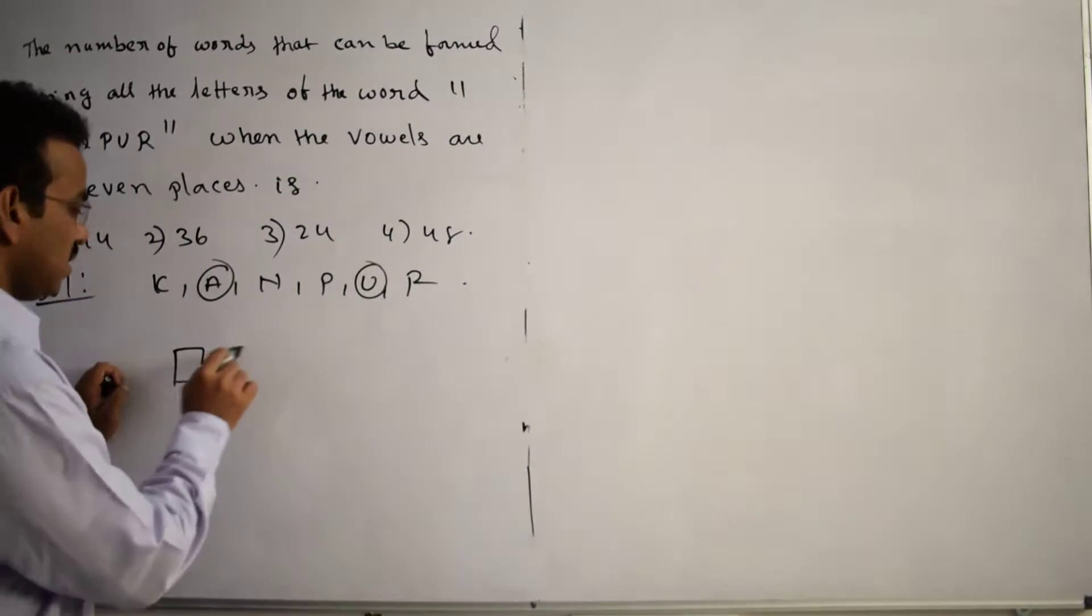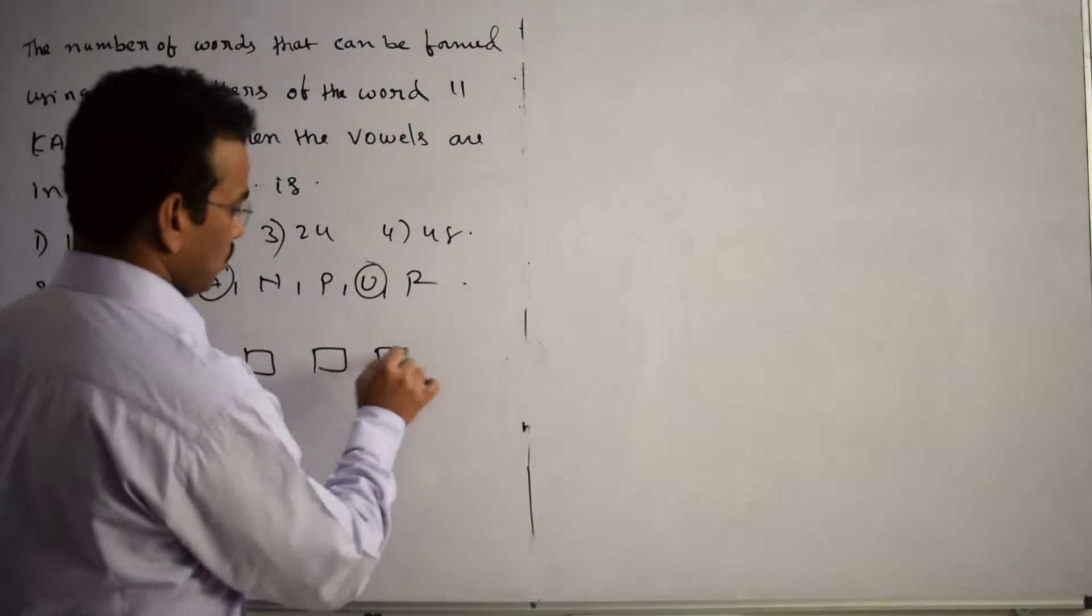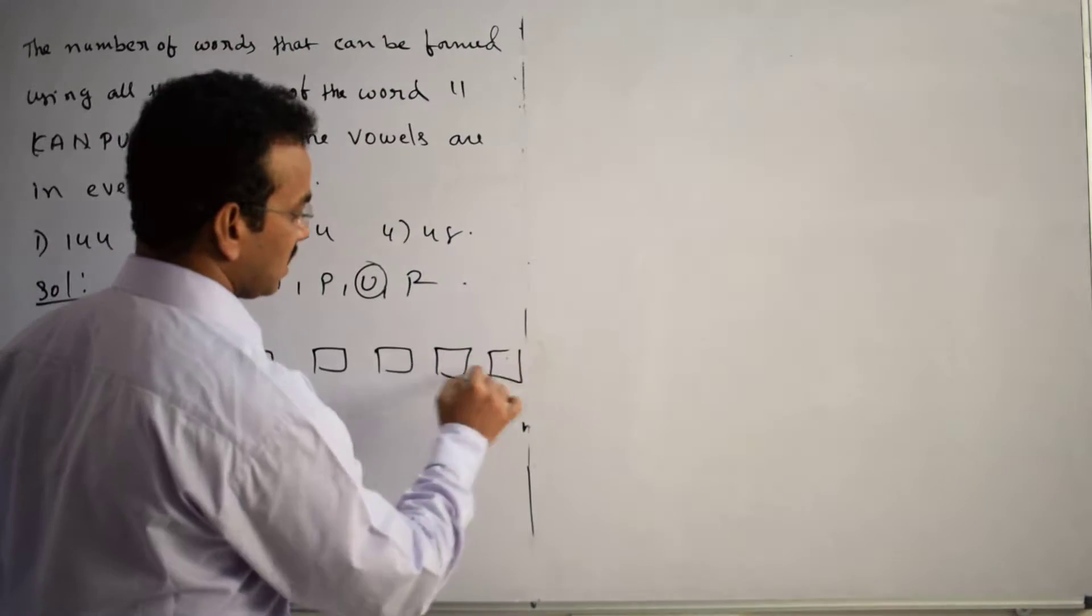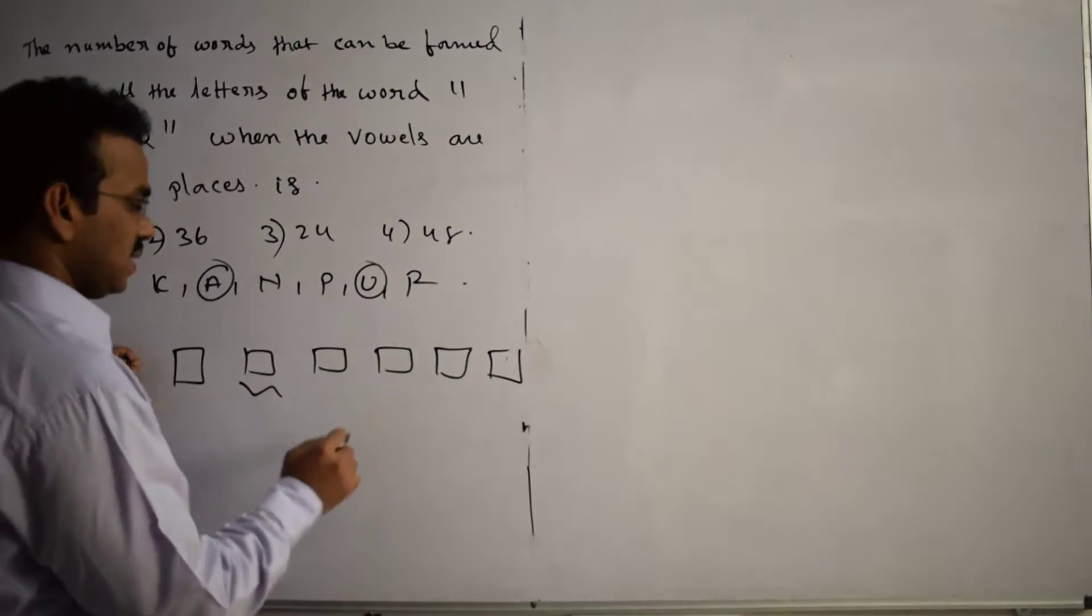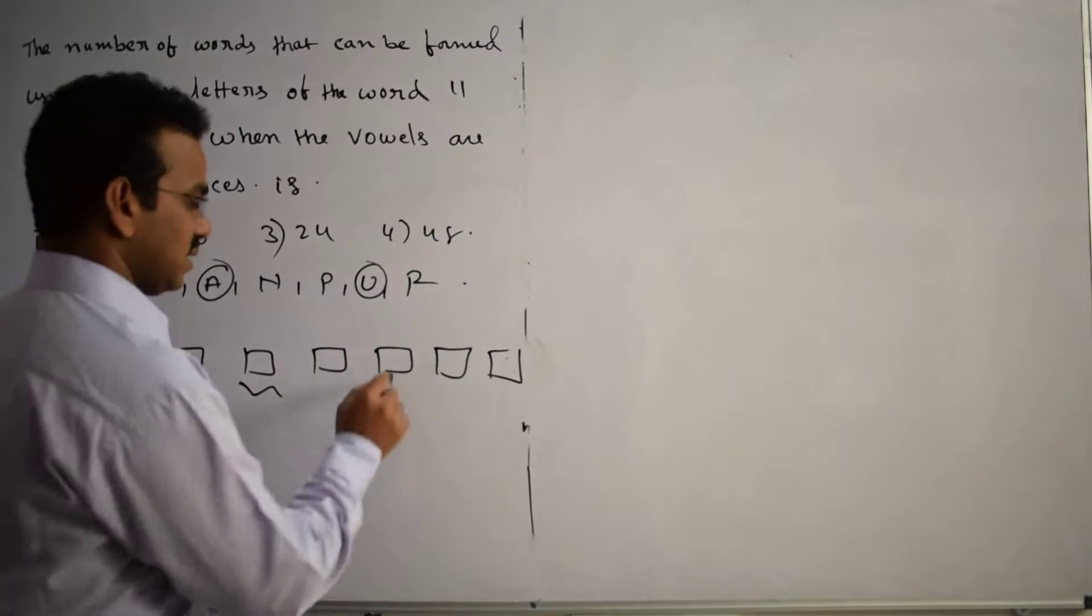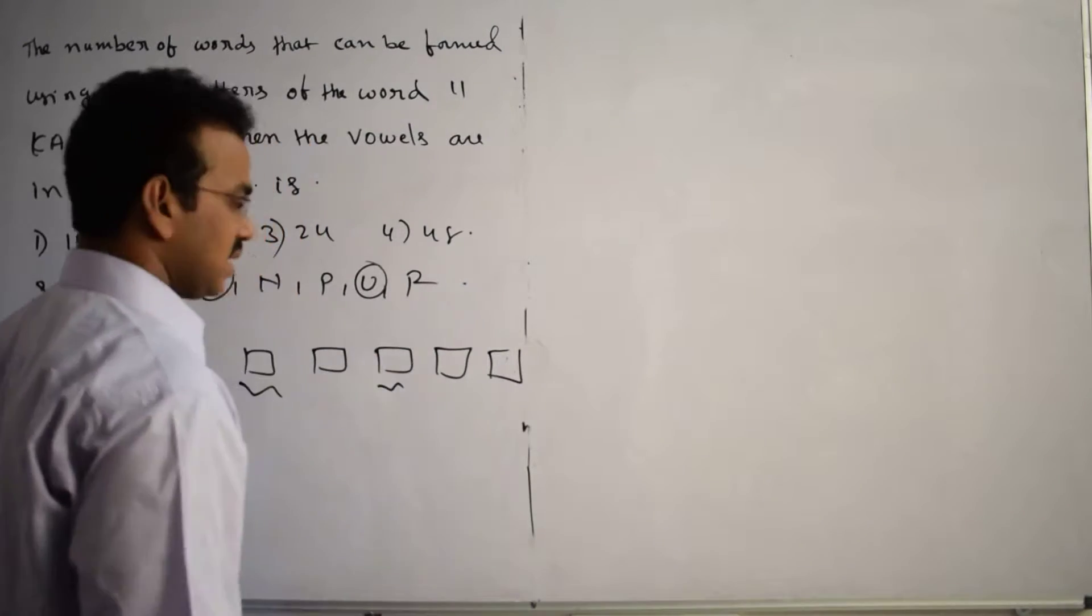Let me take 6 boxes: 1, 2, 3, 4, 5, 6 boxes are there. What are the even places? Let me identify. 2nd position is even place, 4th position is even place, 6th box is also even place.